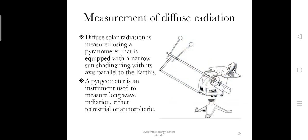For measurement of diffuse radiation, diffuse solar radiation is measured using a pyranometer equipped with a narrow shading ring with the axis parallel to Earth's axis. The pyranometer is an instrument used for measuring longwave radiation from terrestrial or atmospheric sources.